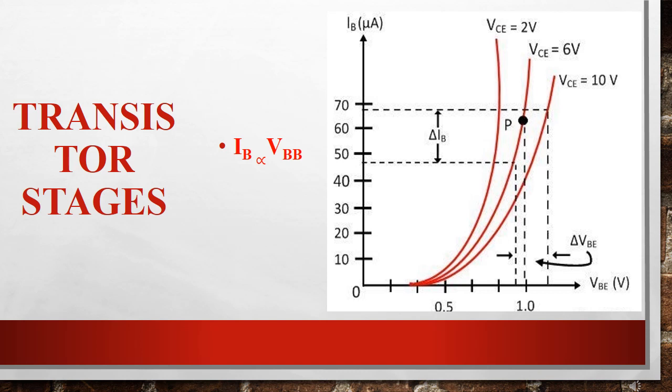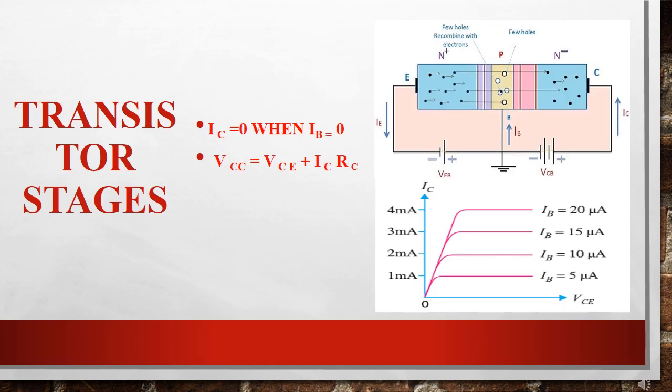Now, when we increase VBB, then current goes on increasing. So we can say that IB, that is base current, is directly proportional to VBB, that is input voltage. This is the graph of the forward biasing, which we have already discussed, that after cutoff, current increases, and before cutoff, there is no current.